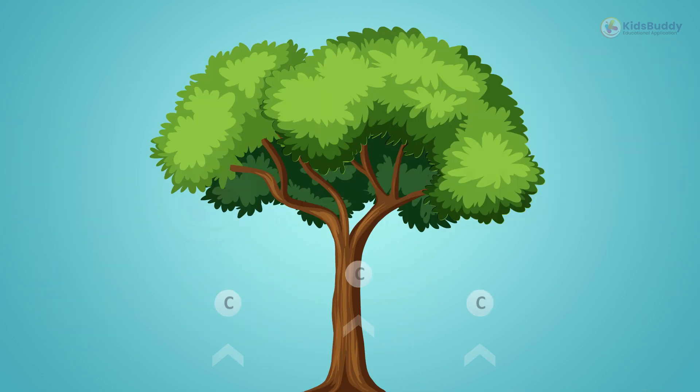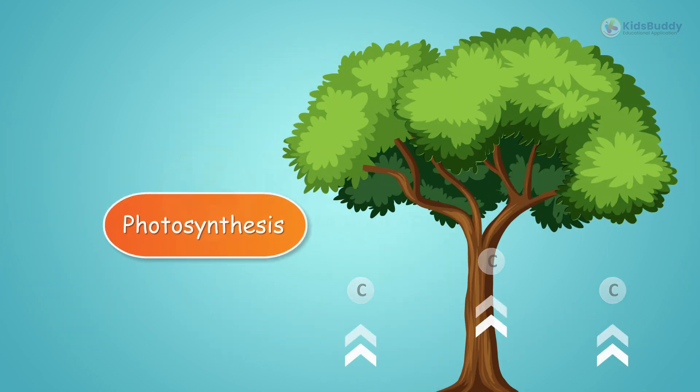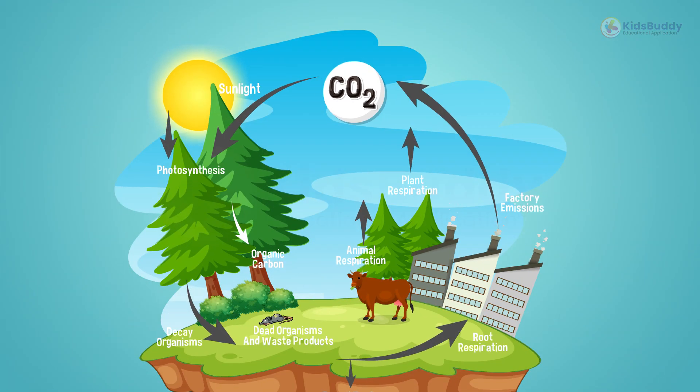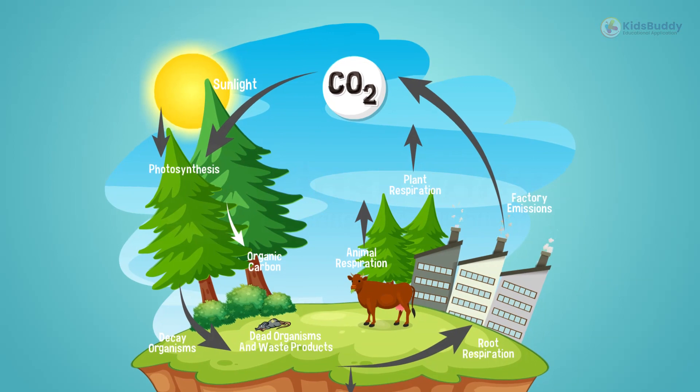From here, plants will again absorb it for photosynthesis and the cycle repeats. This is a diagram of the carbon cycle and its processes.